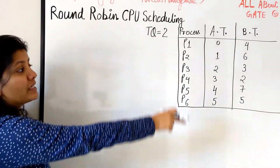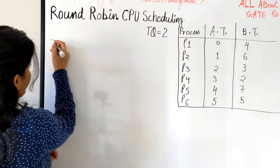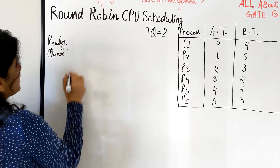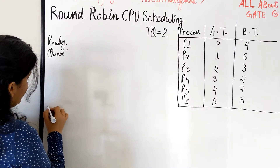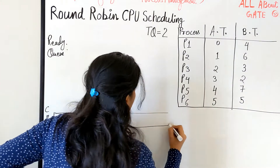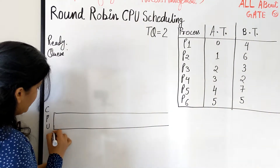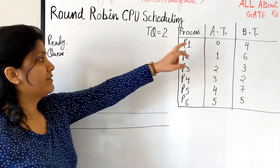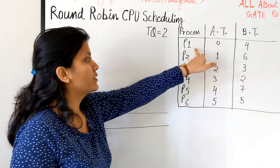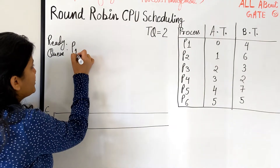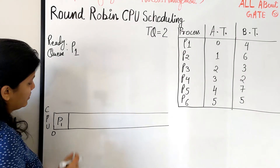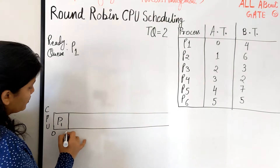We have the respective arrival times and burst times. I'm maintaining the ready queue and we'll need more space. Here I'm making my CPU scheduling on the Gantt chart with a time scale. At time 0, we always look at the arrival time and then look at the time quantum. At time 0 we just have one process — no other process — so P1 is available in the ready queue.